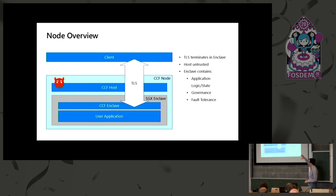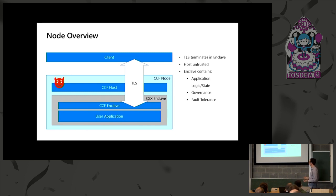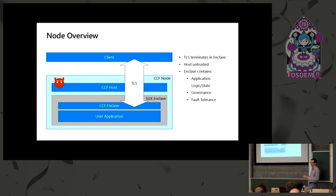A single CCF node roughly looks like this. A client talks to the node over TLS — we only support TLS, not generic byte streams. That goes through the host, which is potentially malicious and can look at all the frames, but they're encrypted TLS frames so the host can't see anything useful. The TLS session terminates inside the enclave, which contains two parts: our framework providing functionality, and the user application code running the business logic. The enclave contains application logic and state, governance code that allows enclaves to talk to each other, and fault tolerance code to distribute updates across the network.